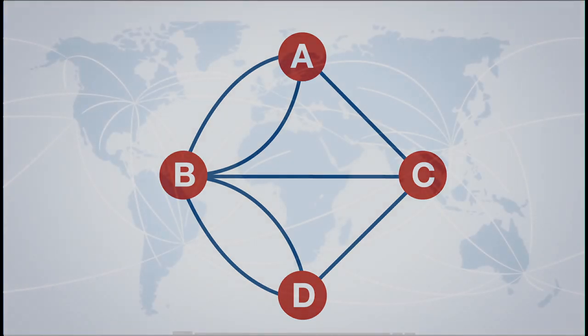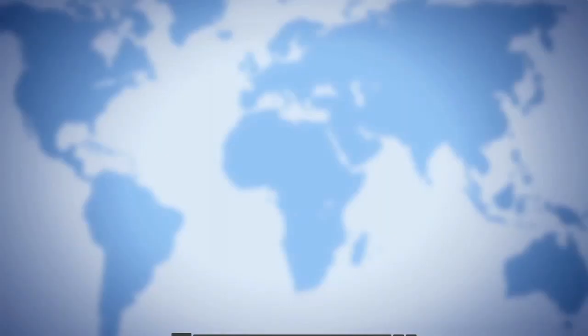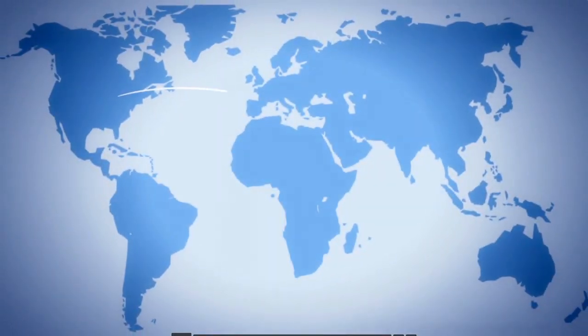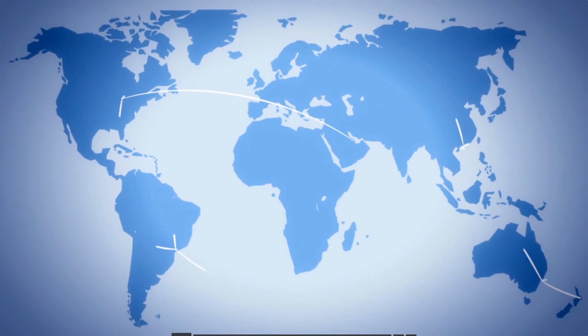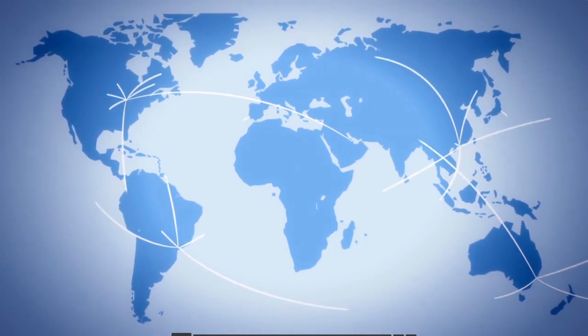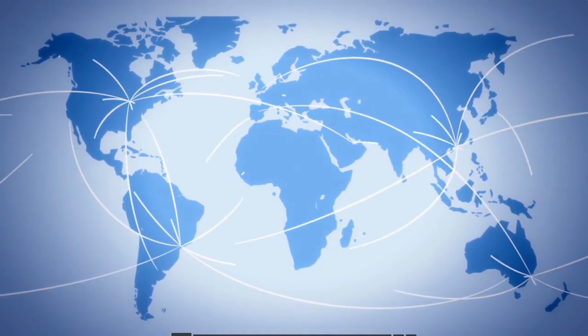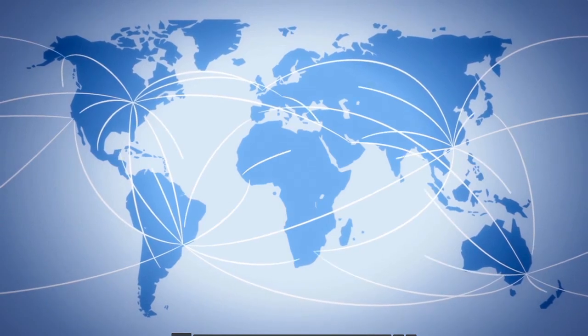A graph is another name for a network. For mathematicians, a network is made up of nodes, the locations in the network, and arcs, the connections between nodes. For airline routes, nodes are airports at a particular time, and arcs, or edges, are flights, the connections between airports.